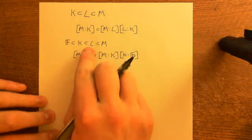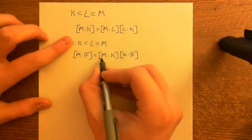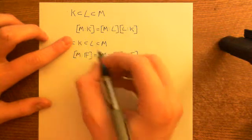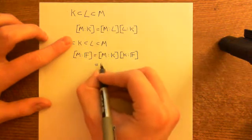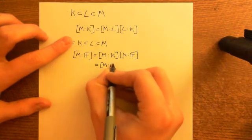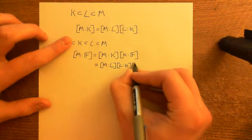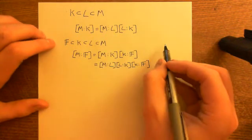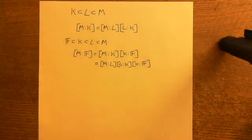Now imagine that L is back again, and forget that F is there — we're back to this scenario again. So we can write the degree of M over K as equal to the degree of M over L times the degree of L over K. We can now substitute this in, giving us the degree of M over L times the degree of L over K times the degree of K over F. And you'll have huge great chains of fields, and you can generalise this quite simply.